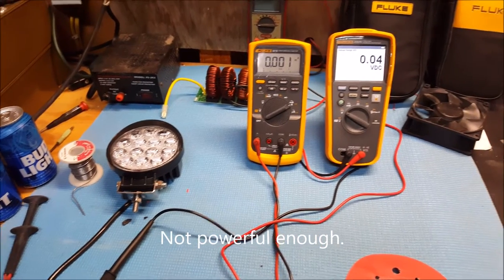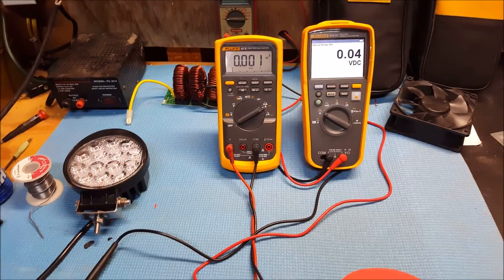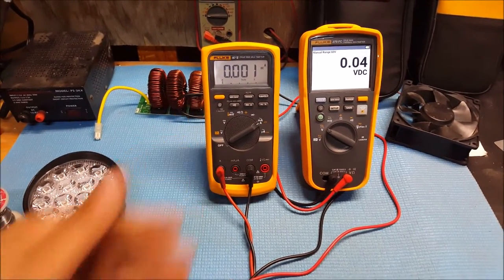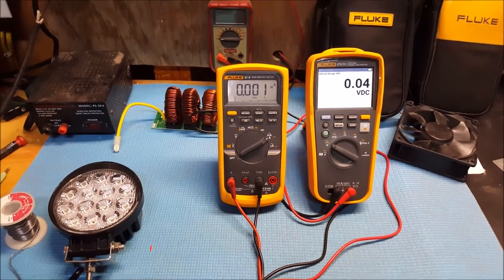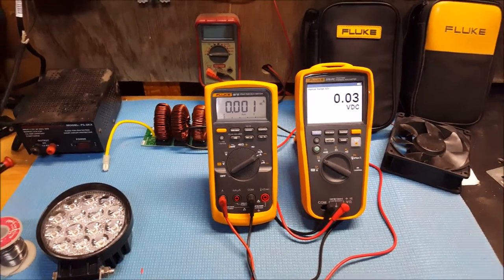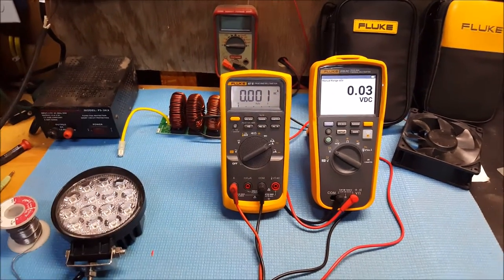I went ahead and got my Fluke meters out here, my Fluke 87 and my Fluke 279. I got the one on the left here reading DC current and the one on the right reading the DC voltage. It's picking up something here from the capacitor in the power supply or probably on the LEDs.